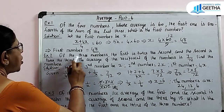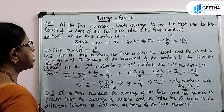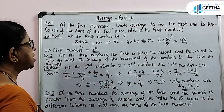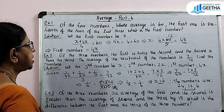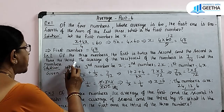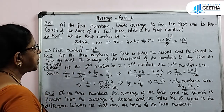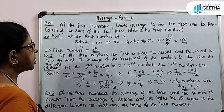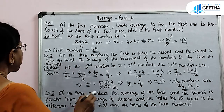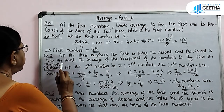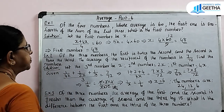Exercise number 2: Of the three numbers, the first is twice the second and the second is twice the third. The average of the reciprocals of the numbers is 7 by 72. Find the numbers.